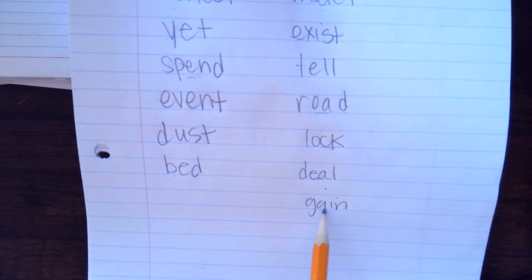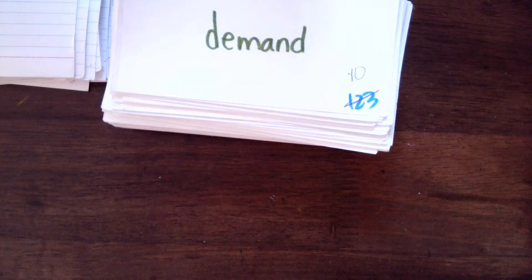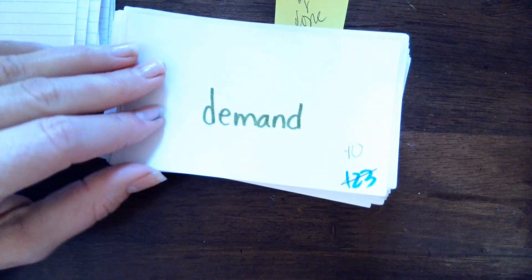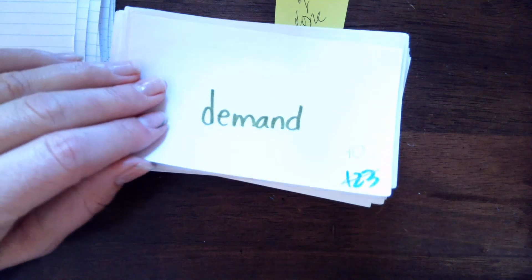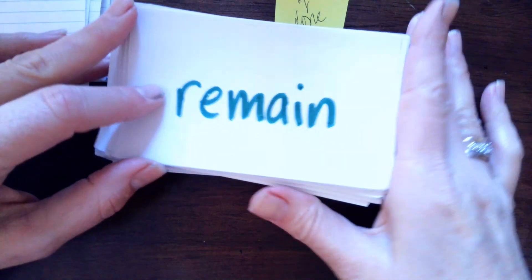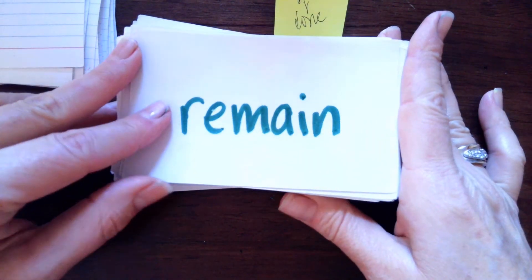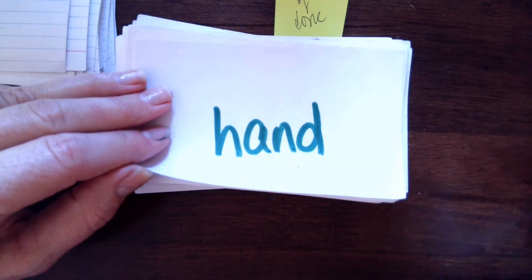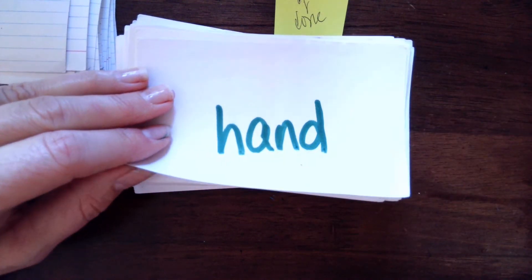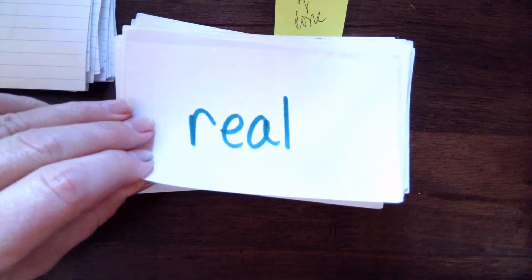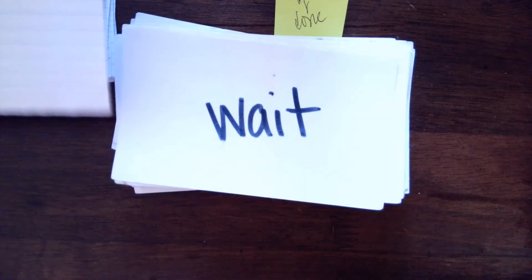AI makes a — ga, ain — gain. AN makes an — da, eh, man — demand. AI makes a — er, eh, ain — remain. AN makes an — ha, and. EA makes e — er, eel — real. AI makes a — wa, ate — wait.